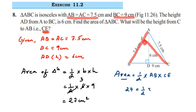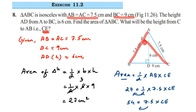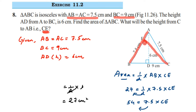The area we know is 27, so: 27 = half into 7.5 into CE. We're going to transpose 2 to the other side, so 2 multiplied by 27 gives 54. Therefore 54 = 7.5 multiplied by CE. Now we're going to transpose 7.5 — since it's in multiplication, it comes to the other side as division.